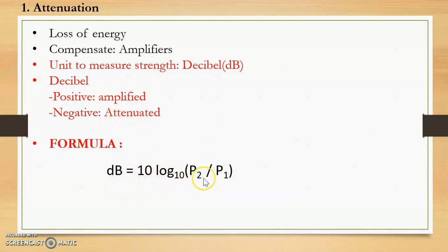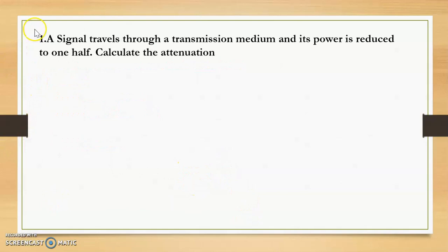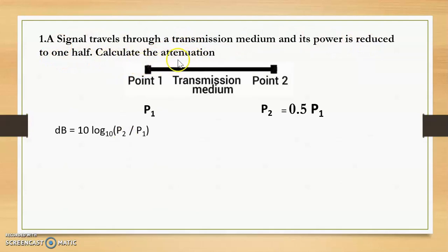The formula used is dB = 10 log(P2/P1) to the base 10, where P1 and P2 are the powers of the signal at points 1 and 2. Let us solve some problems. The first question: a signal travels through a transmission medium and its power is reduced to one half — calculate the attenuation.